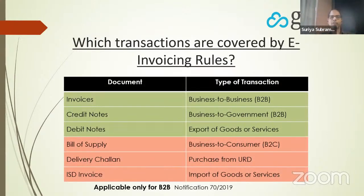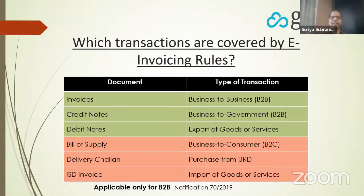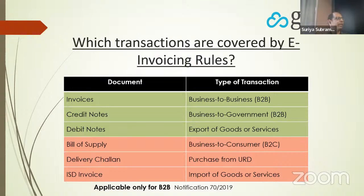Now let's look at which transactions are covered under e-invoicing. There are two parts on this slide: the documents covered and the nature of transaction. Transactions covered (shown in green) include: invoices, credit notes, and debit notes — if you are issuing a tax invoice, credit note, or debit note, you need to generate an e-invoice. Documents not required (shown in red) include: bill of supply for exempt goods, delivery challan for moving goods within the same state, and ISD invoices issued by input service distributors.